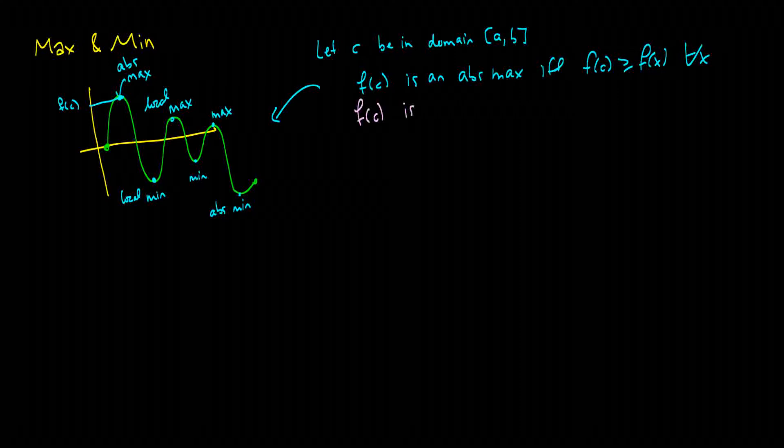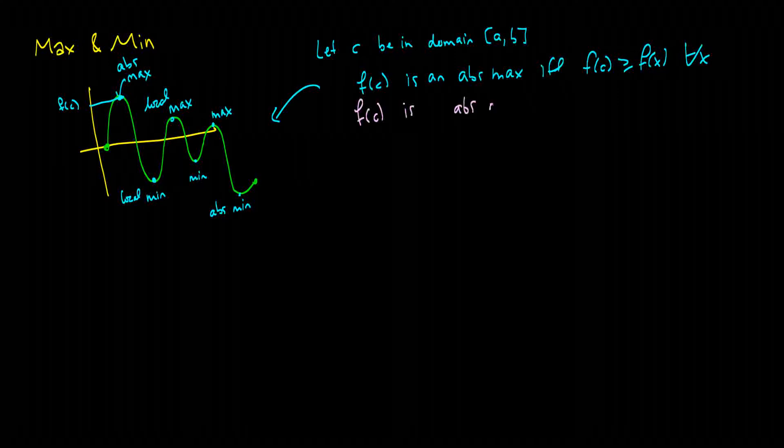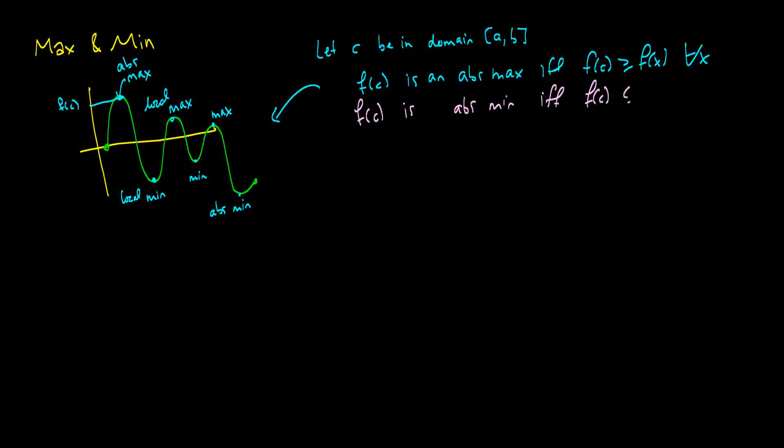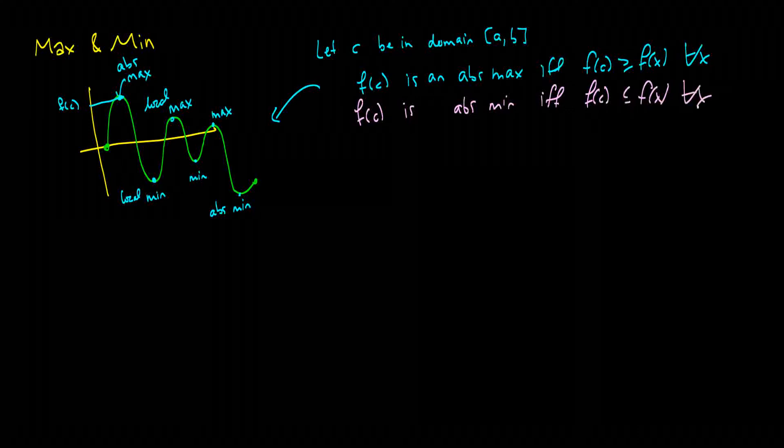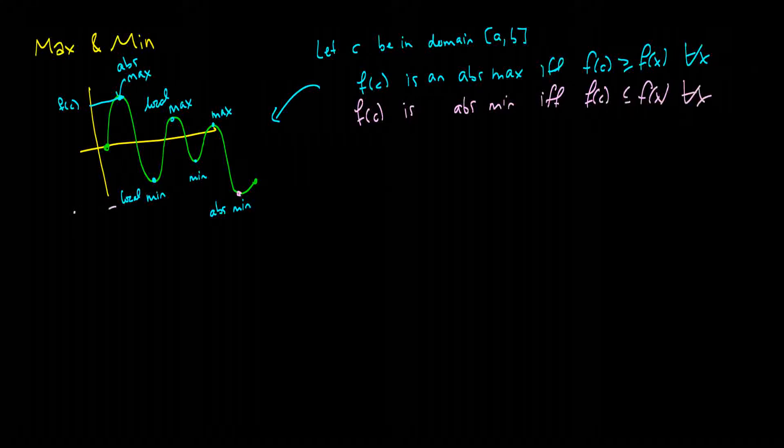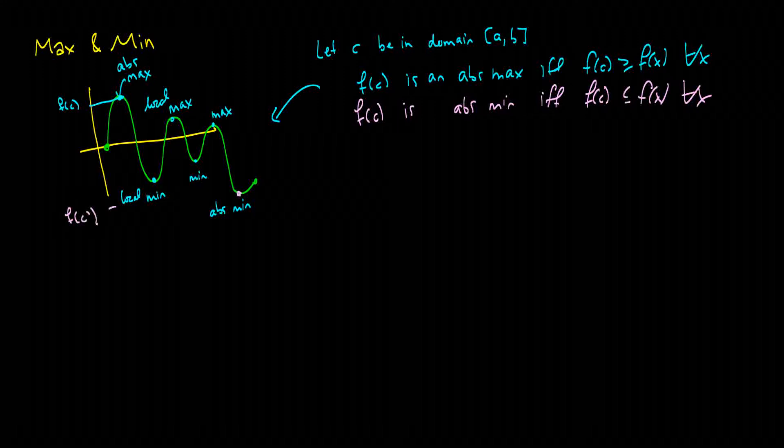And similarly, F of C is an absolute minimum if F of C is less than or equal to F of X for all X. So again, in this thing here, we'll call this F of C, it's a different C, but it's smaller than everything else. So these are the definitions of absolute max and absolute minimums.